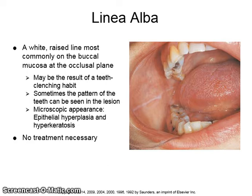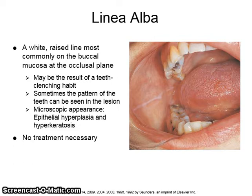Linea alba is a white, raised line most commonly found on the buccal mucosa at the occlusal plane. It may be the result of a teeth-clenching habit, and sometimes the pattern of the teeth can be seen in the lesion. Microscopic appearance is epithelial hyperplasia and hyperkeratosis. No treatment is necessary.